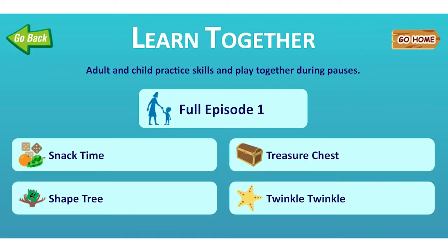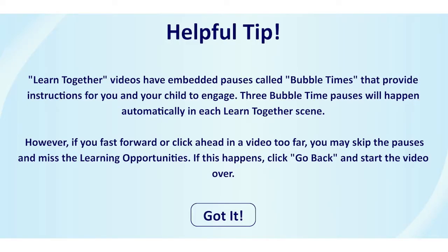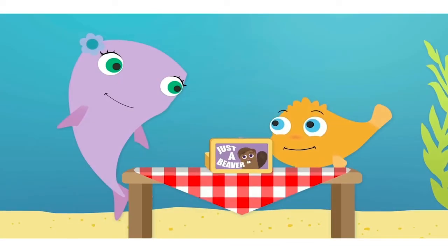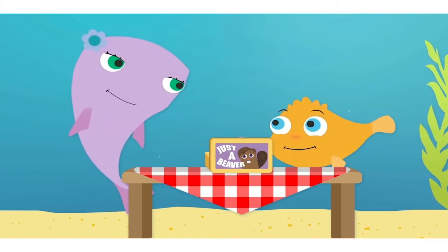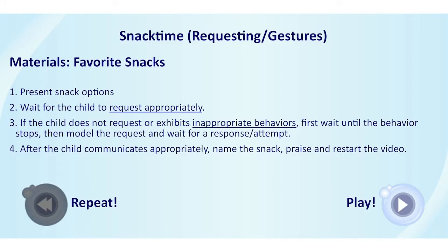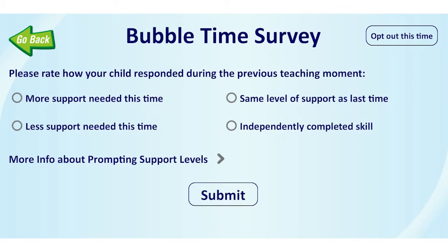In Learn Together, each video includes embedded pauses with accompanying instructions that pop up after the characters model a skill. Every skill has a minimum of one pop-up with instructions to allow you to practice the skill with a child in real time. After your child practices the skill, click Play. You will then be prompted to answer one question about the child's response that will be stored in the data dashboard.